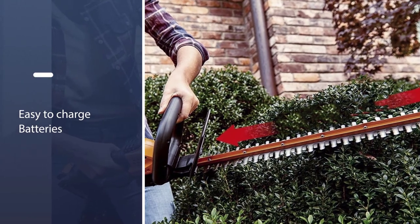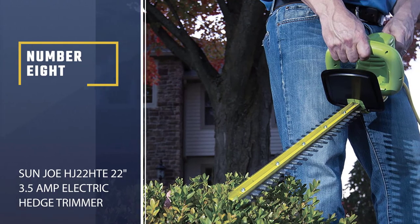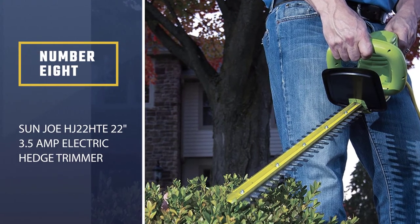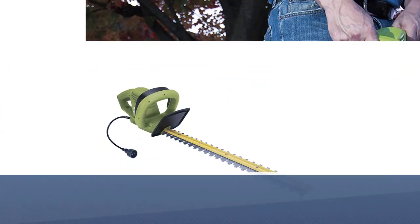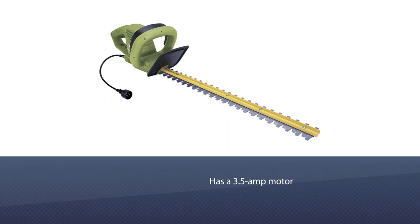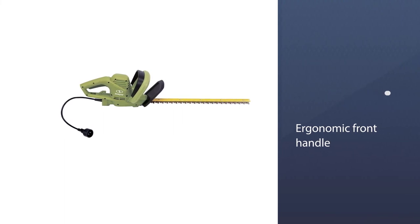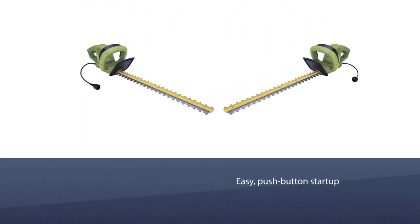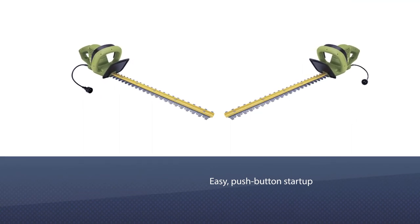Number eight: Sun Joe HJ22HTE 22-inch 3.5 amp electric hedge trimmer. Sun Joe's HJ22HTE, aka Hedger Joe, has a 3.5 amp motor, a full wraparound ergonomic front handle, and an easy push-button startup. But the features don't end there.